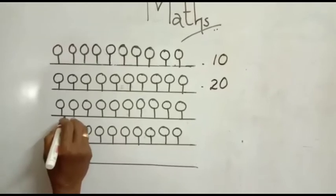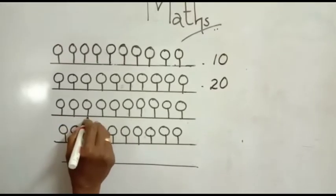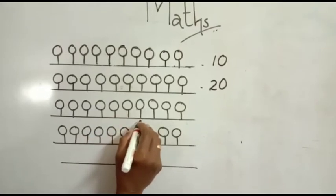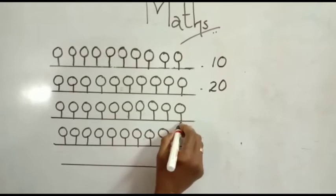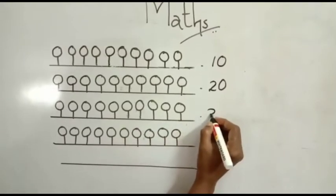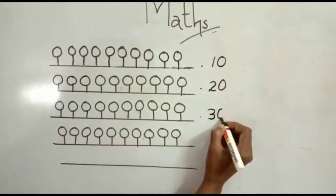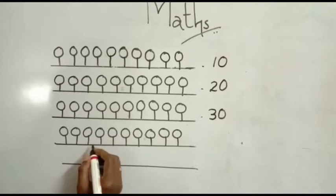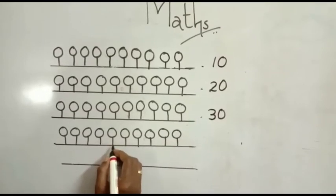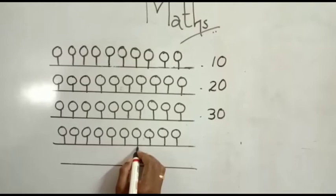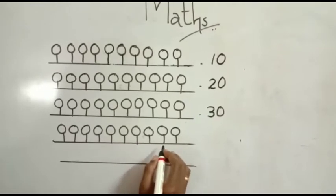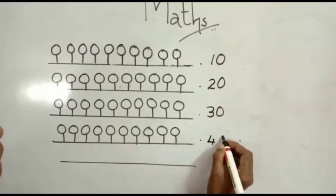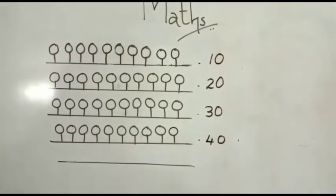Next, 21, 22, 23, 24, 25, 26, 27, 28, 29, 30. 30 means three tens. Okay. 31, 32, 33, 34, 35, 36, 37, 38, 39, 40. 40 means four tens.